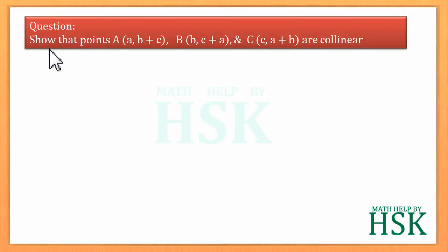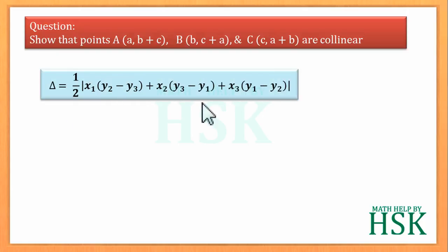Show that points A(a, b+c), B(b, c+a), and C(c, a+b) are collinear. To prove that three points are collinear, firstly I write the formula of the area of the triangle which we have already discussed.